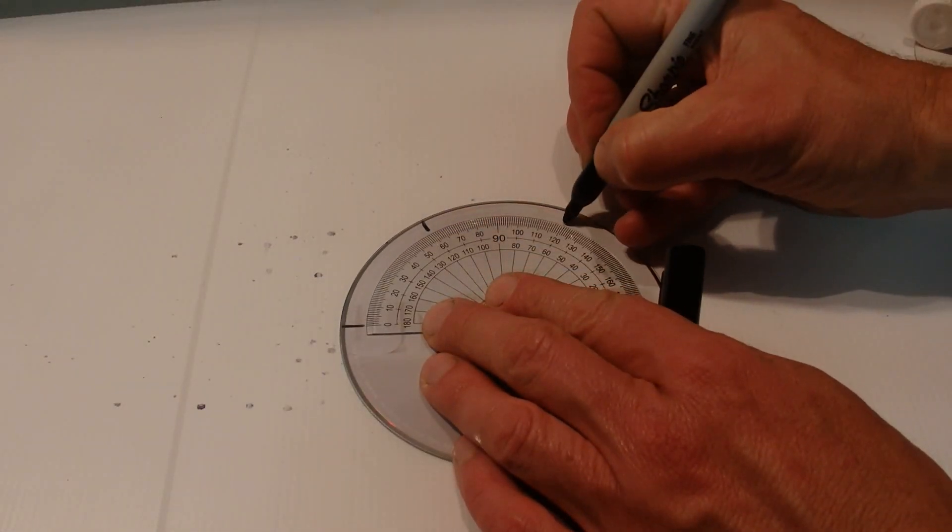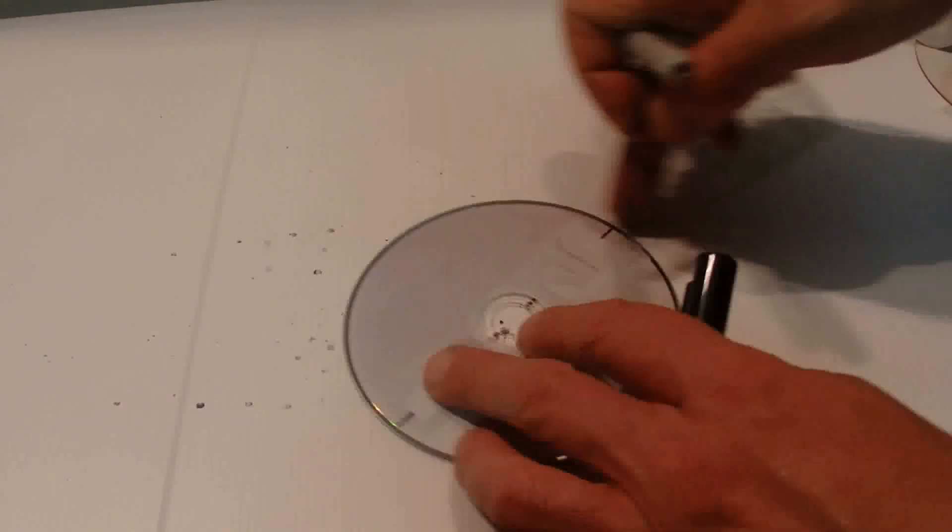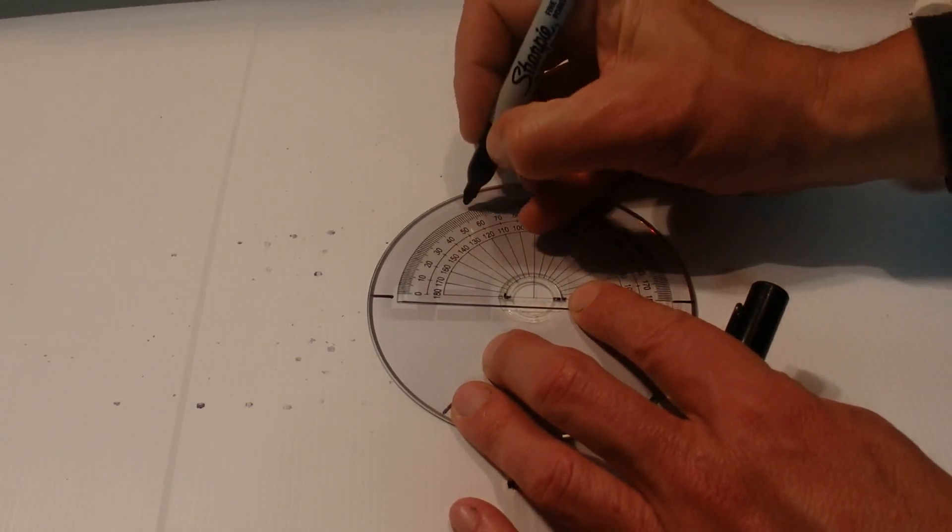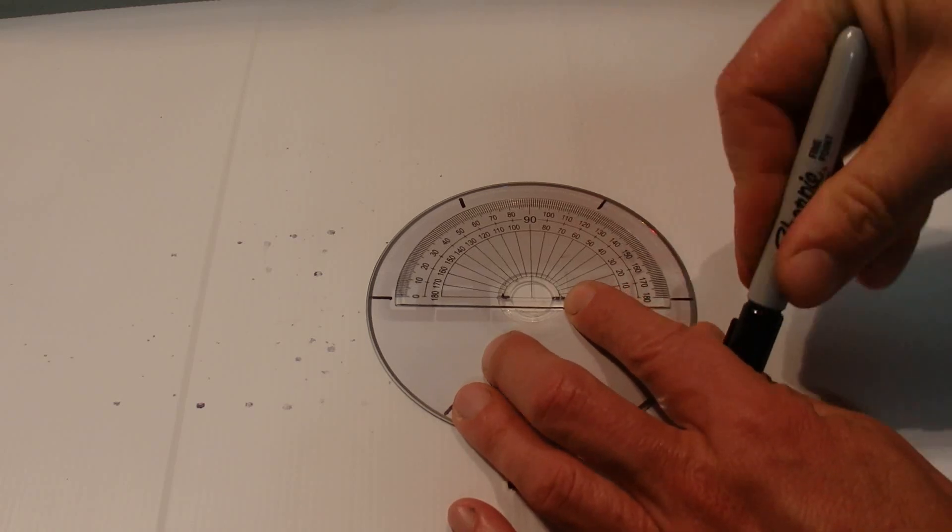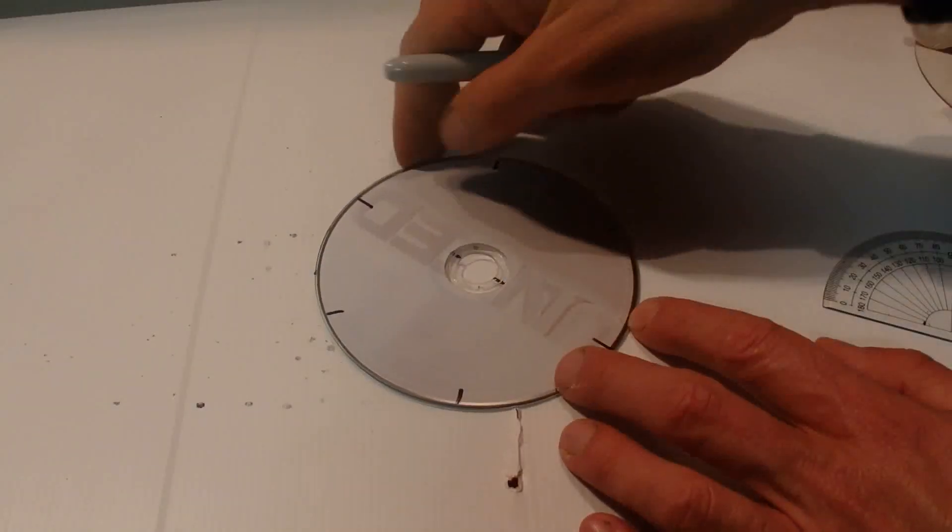Then do the same on the other side: mark it at 60 and mark it at 120. You can see there that now I've got six marks around my CD that are evenly spaced.